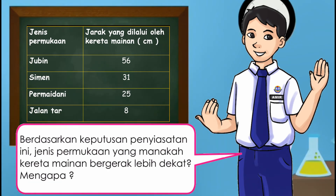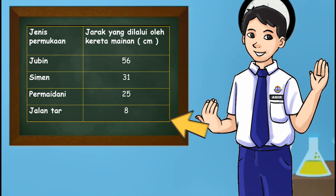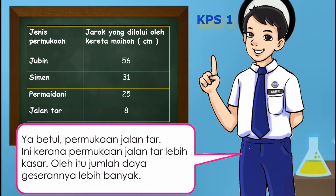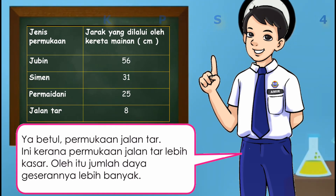Berdasarkan keputusan penyiasatan ini, jenis permukaan yang manakah kereta mainan bergerak lebih dekat? Mengapa? Ya betul, permukaan jalantar atau permaidani. Ini kerana permukaannya lebih kasar, oleh itu jumlah daya geserannya lebih banyak.